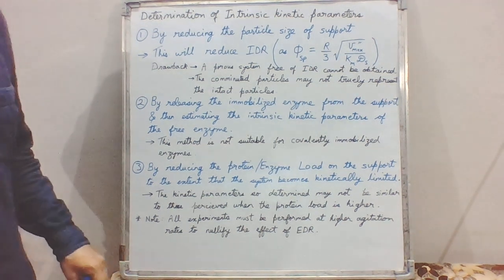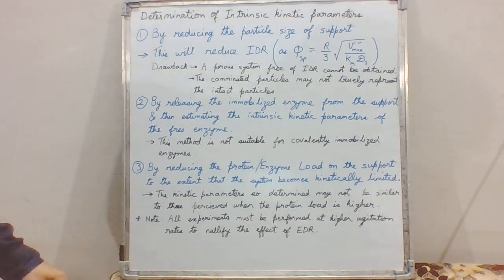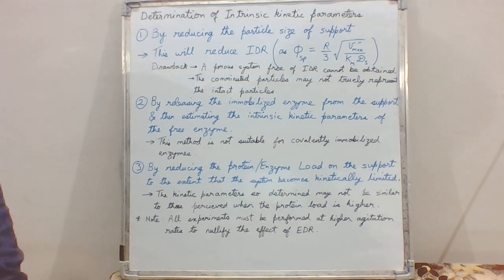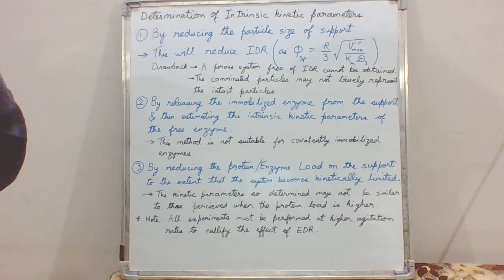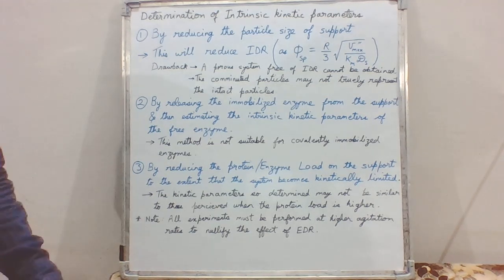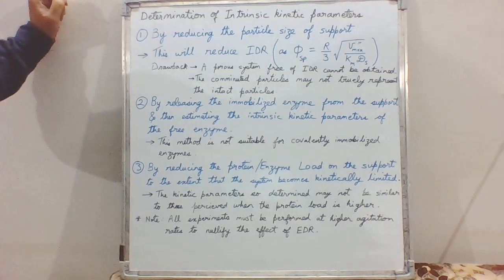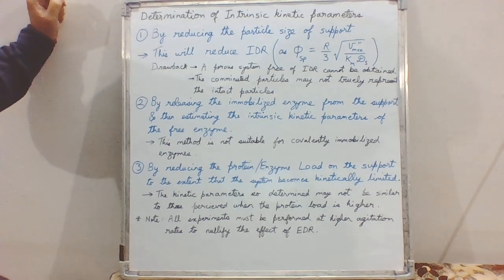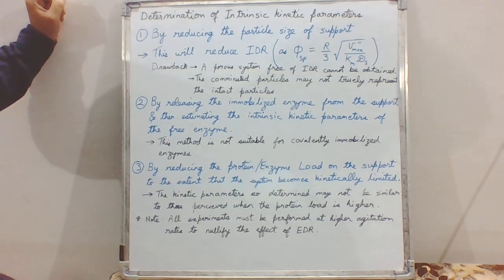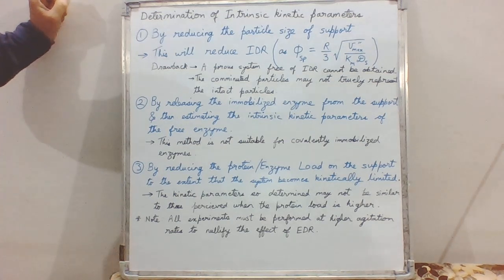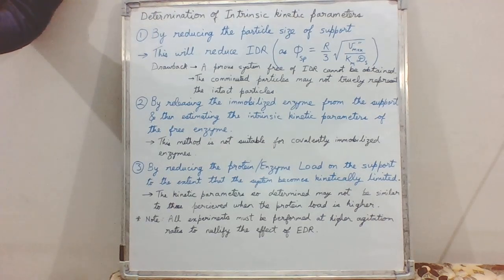Hello everyone and welcome back. In the previous lecture we discussed about internal diffusional restrictions (IDR) for immobilized enzymes — specifically the substrate profile that comes into effect due to IDR in the case of spherical geometry and flatbed or membrane geometry. In today's lecture we will discuss how to determine the intrinsic kinetic parameters of an enzyme when using porous supports. With porous supports, internal diffusional restrictions make things more complex than external diffusional restrictions in the case of non-porous supports.